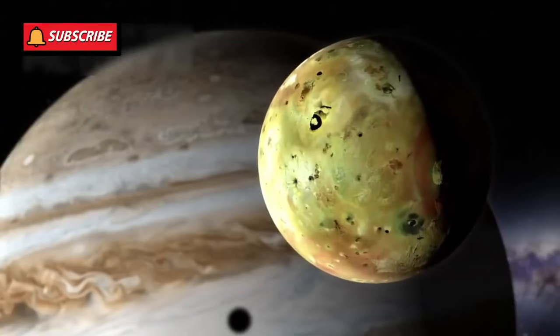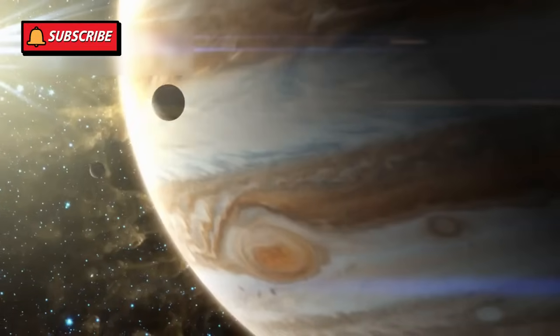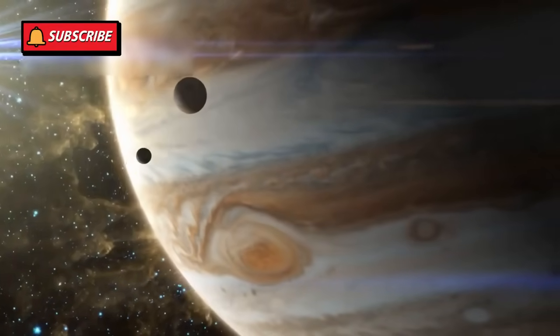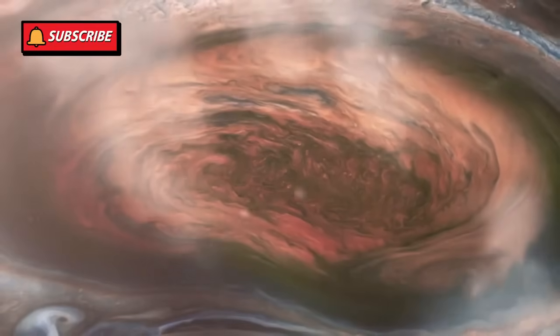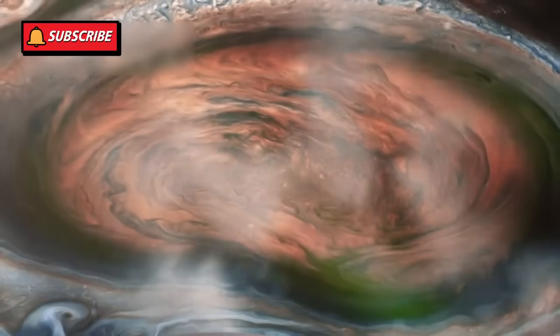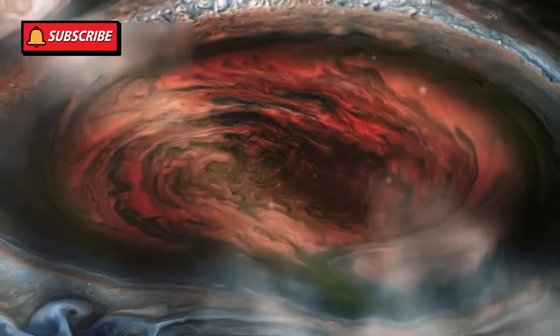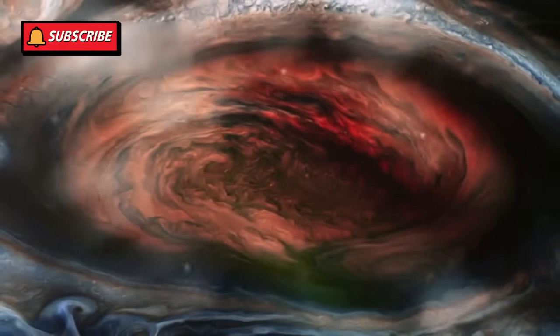Voyager 1 reached Jupiter in March 1979. What it found stunned the scientific community. It sent back breathtaking images of the Great Red Spot, a monstrous storm wider than Earth, raging in Jupiter's atmosphere.